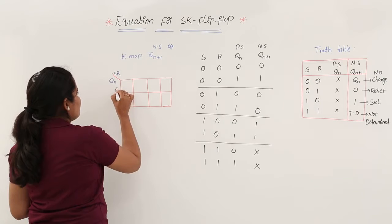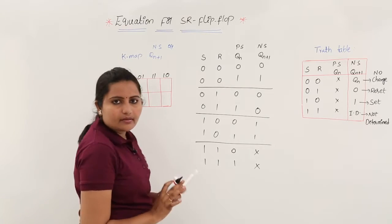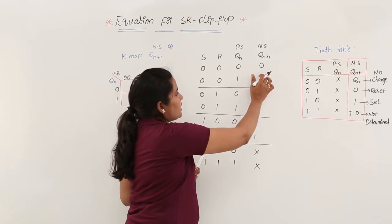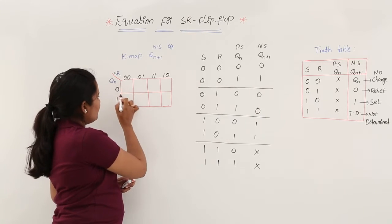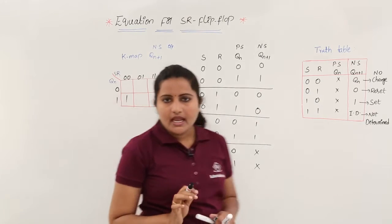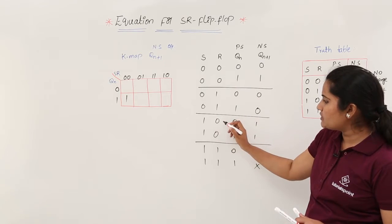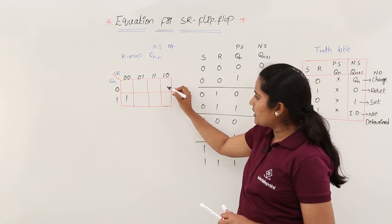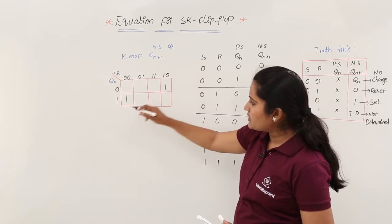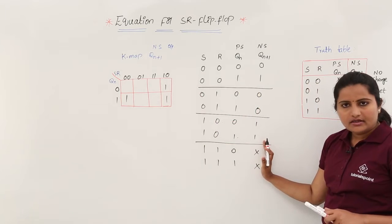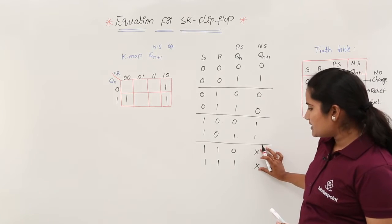The SR axis values follow Gray code: 0,0 then 0,1 then 1,1 then 1,0, and QN takes values 0 and 1. Now it is time to place the 1s and perform grouping. We have a 1 at SR=0,0 and QN=1, another 1 at SR=1,0 and QN=0, and another at SR=1,0 and QN=1. We also consider the don't cares at SR=1,1 positions.